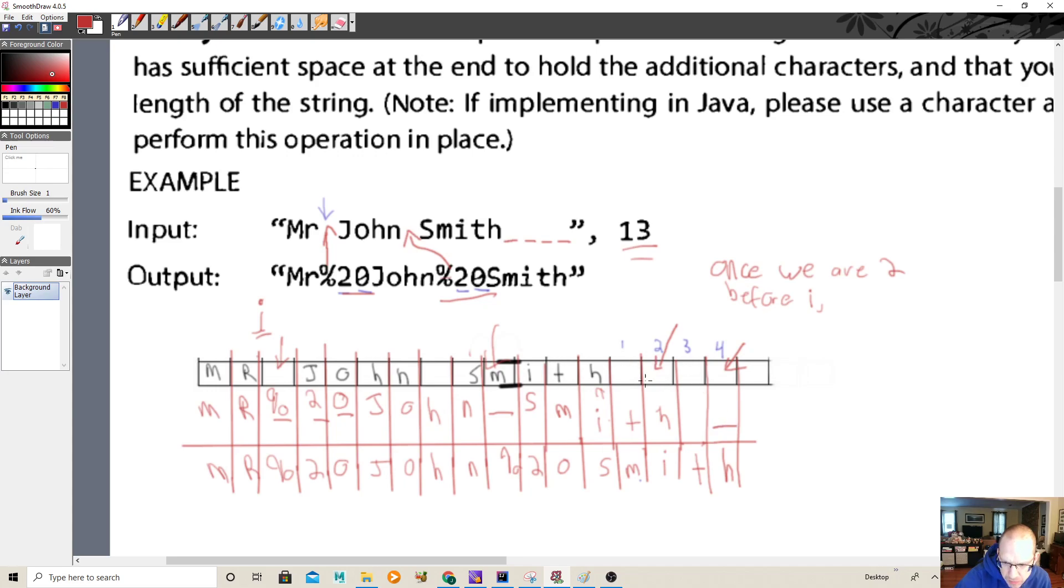We go to here, what's 2 over? Okay, 1, 2. That's a blank. Good. We go to here, what's 2 over? H. What's 2 over? I. And so on and so forth.